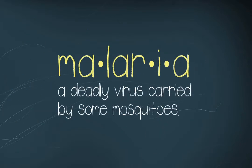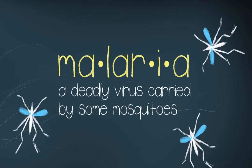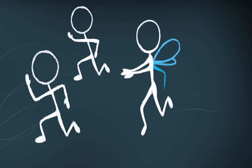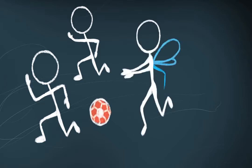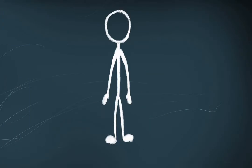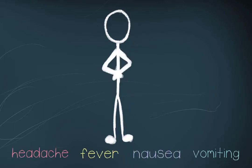It teaches children ways to avoid malaria, a deadly virus carried by some mosquitoes. Mosquito Tag is like a game of freeze tag, but with three different roles to play. The player who's it plays the role of the mosquito carrying the malaria virus. When a mosquito tags a regular player, he or she is infected and must stop and act out the symptoms of malaria.